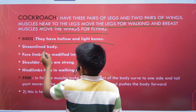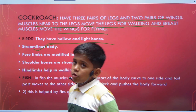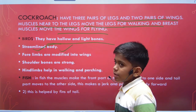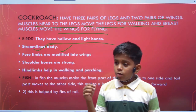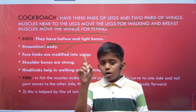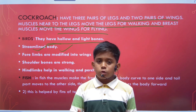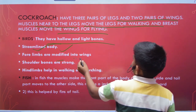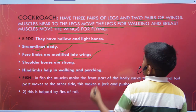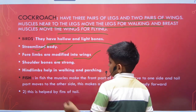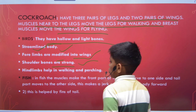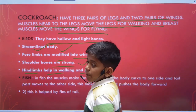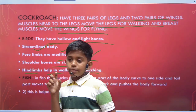Birds have hollow and light bones and a streamlined body — a body designed for a particular activity, just as a fish has a streamlined body to swim. Birds' forelimbs are modified into wings, their shoulder bones are strong, and their hind limbs help in walking and perching.